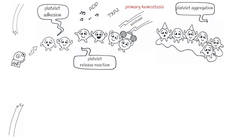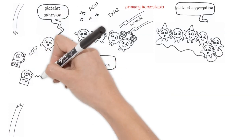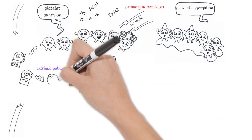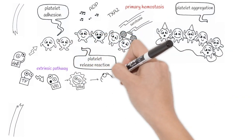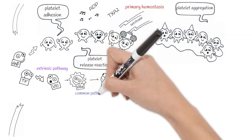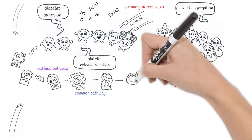When a vessel is broken, tissue factor also arrives and provokes the beginning of the extrinsic pathway with the activation of factor VII that activates factor X, and here starts the common pathway.